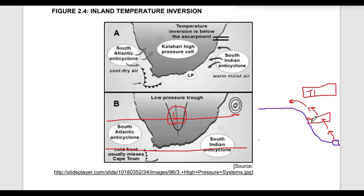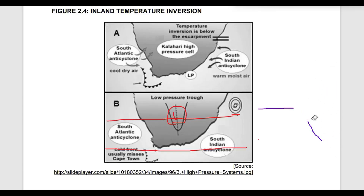Why is the inversion layer upward in summer and downward in winter? In winter there is more subsiding cold air, which becomes very warm as it descends, compressing at certain altitudes around 300 metres, and this pushes the inversion layer downwards. In summer we experience very low pressure and high temperatures, causing intense evaporation and rising moisture which pushes the inversion layer upwards — above the interior or far from the escarpment.